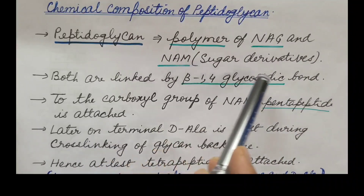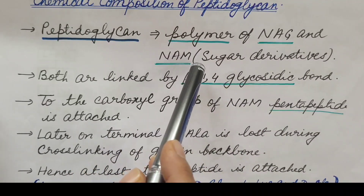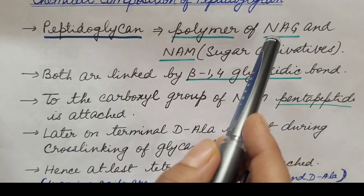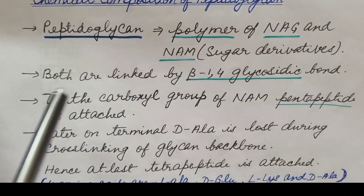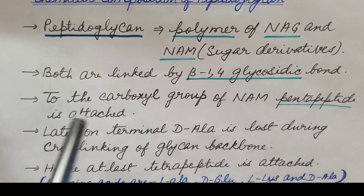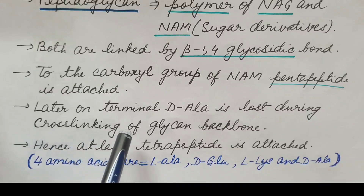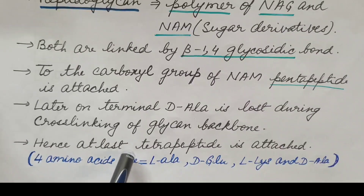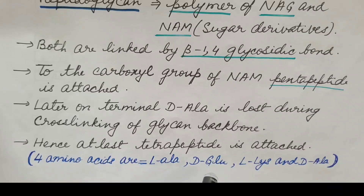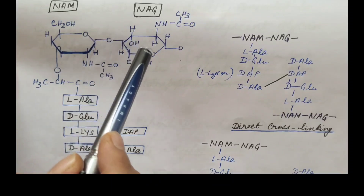Peptidoglycan is a polymer of NAG and NAM, which are sugar derivatives. NAG stands for N-acetyl glucosamine and NAM stands for N-acetyl muramic acid. The glycan backbone consists of alternating NAG and NAM units linked by beta-1,4 glycosidic bonds. To the carboxyl group of NAM, a pentapeptide is attached, but the terminal D-alanine is lost during cross-linking, leaving a tetrapeptide.